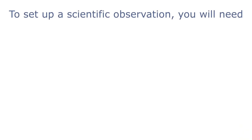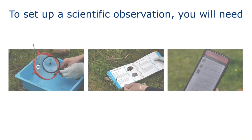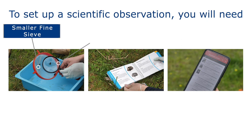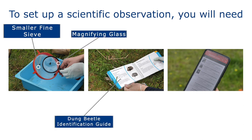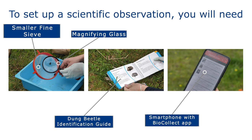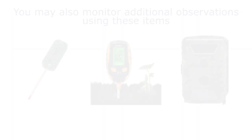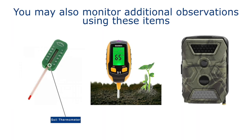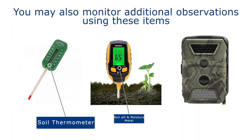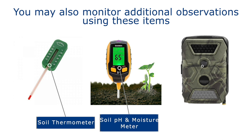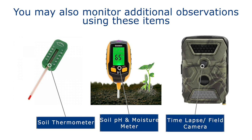For scientific observations and monitoring, you will need a small fine sieve, a magnifying glass, the dung beetle identification guide, and a smartphone with the BioCollect app. You may also choose to monitor with a soil thermometer, soil pH and moisture meter, and a time-lapse field camera.